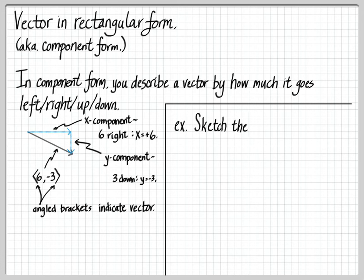So here's a simple example. What if I wanted to sketch the vector u that had components negative one and five? So that means that's starting somewhere. It goes one left because the x component is negative one, and then it goes five up. And so the vector u goes from here and goes to there. So it looks like that.